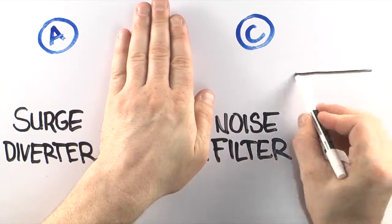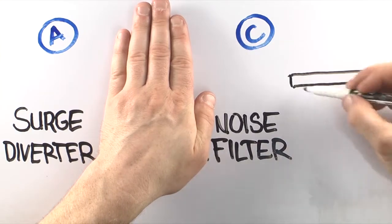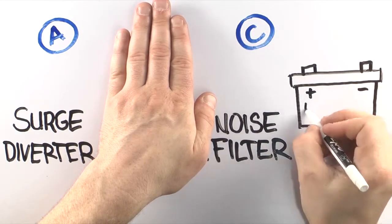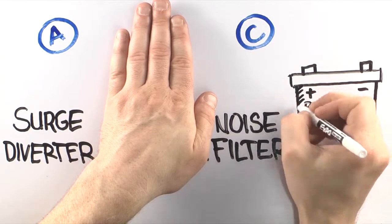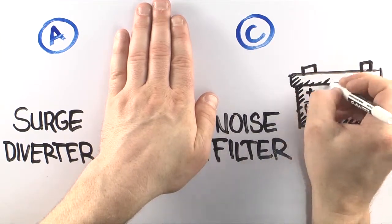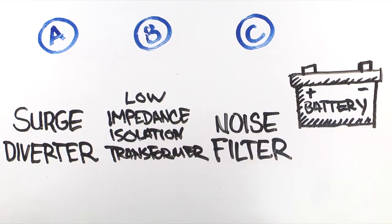Most UPS systems incorporate a surge diverter, a noise filter, and a battery. That may cover you in power outages, but it still doesn't provide complete protection. You need a solution that incorporates a low impedance isolation transformer.